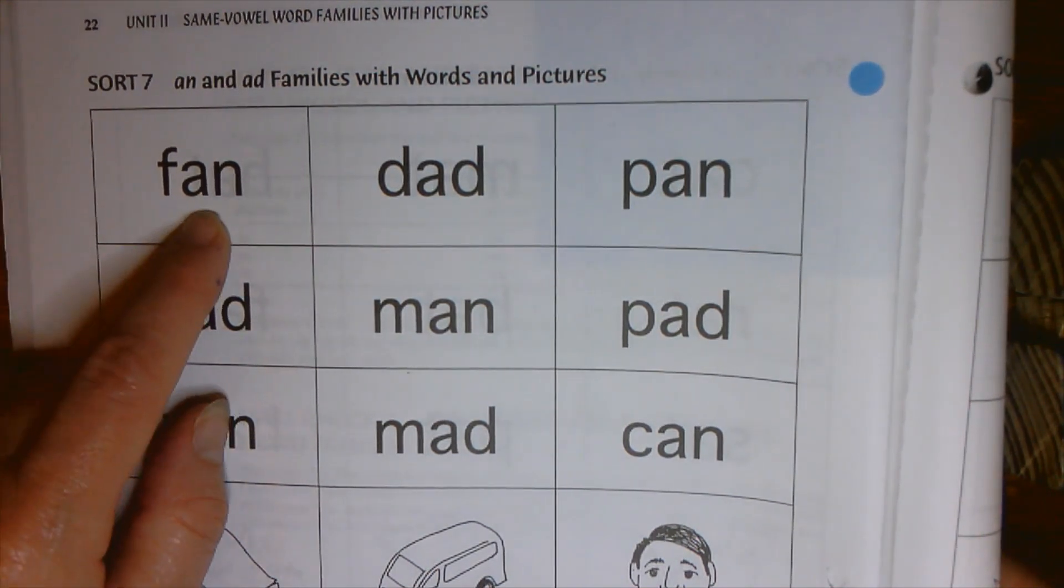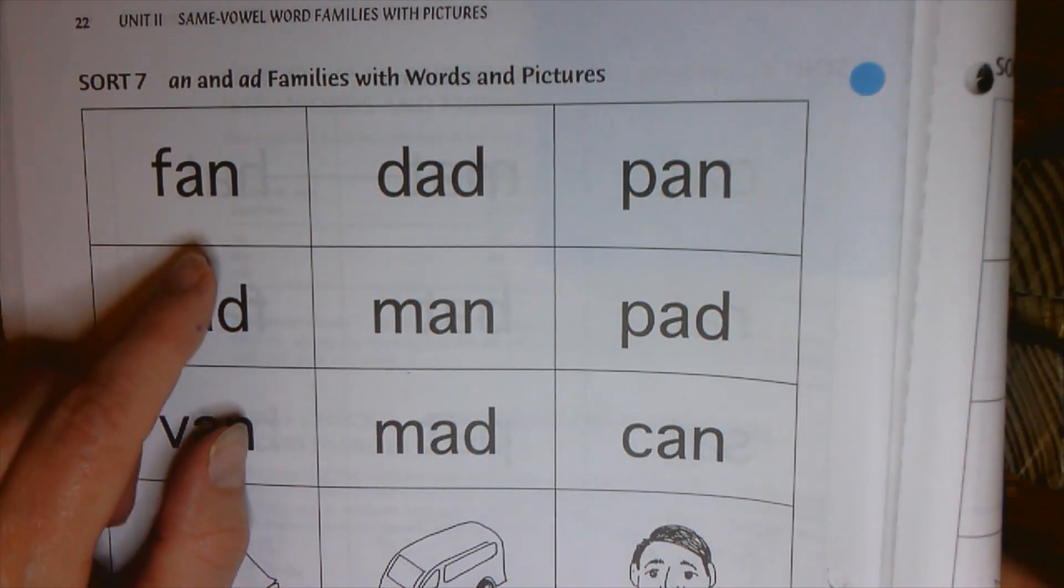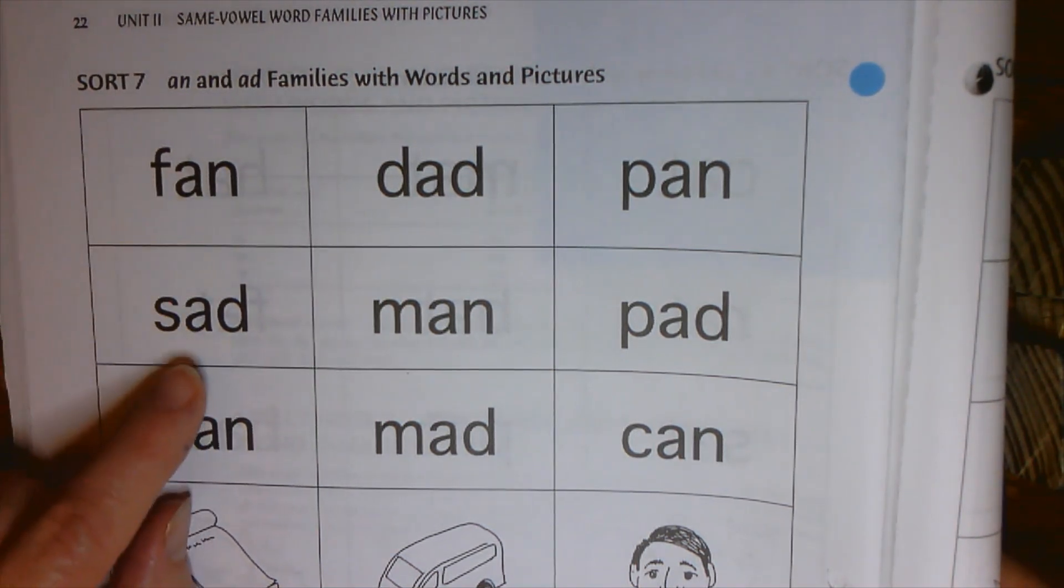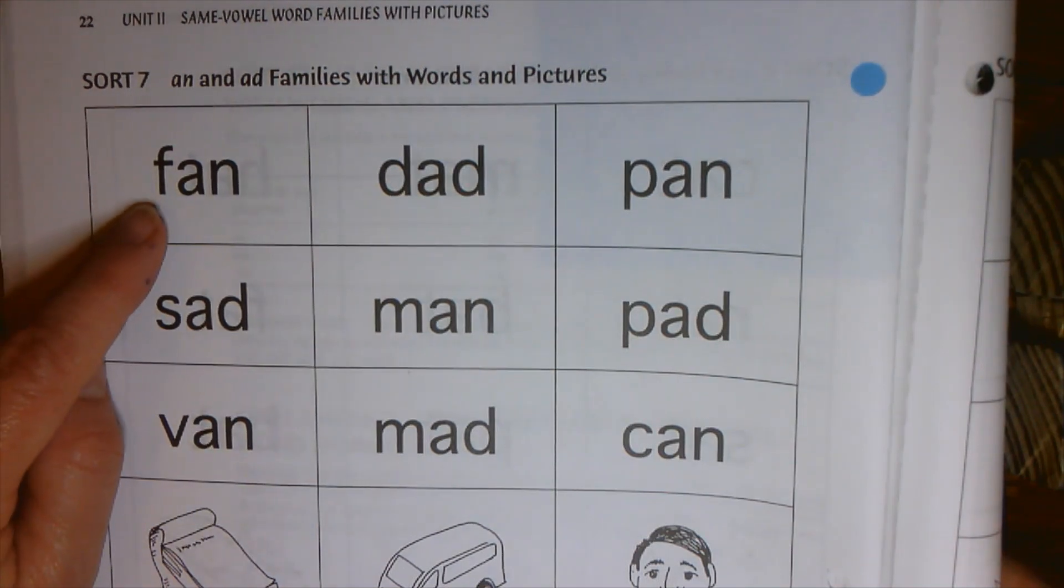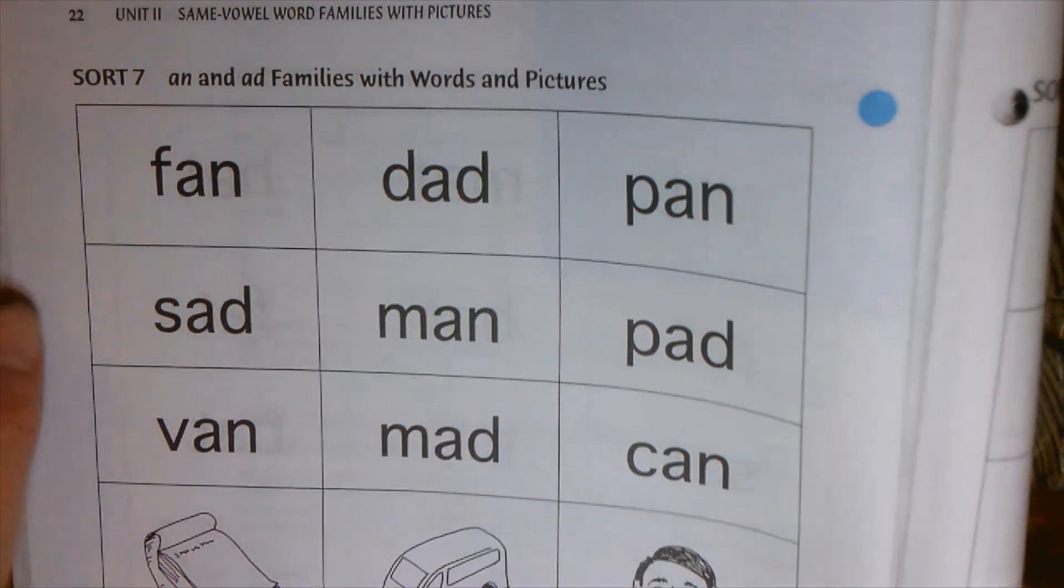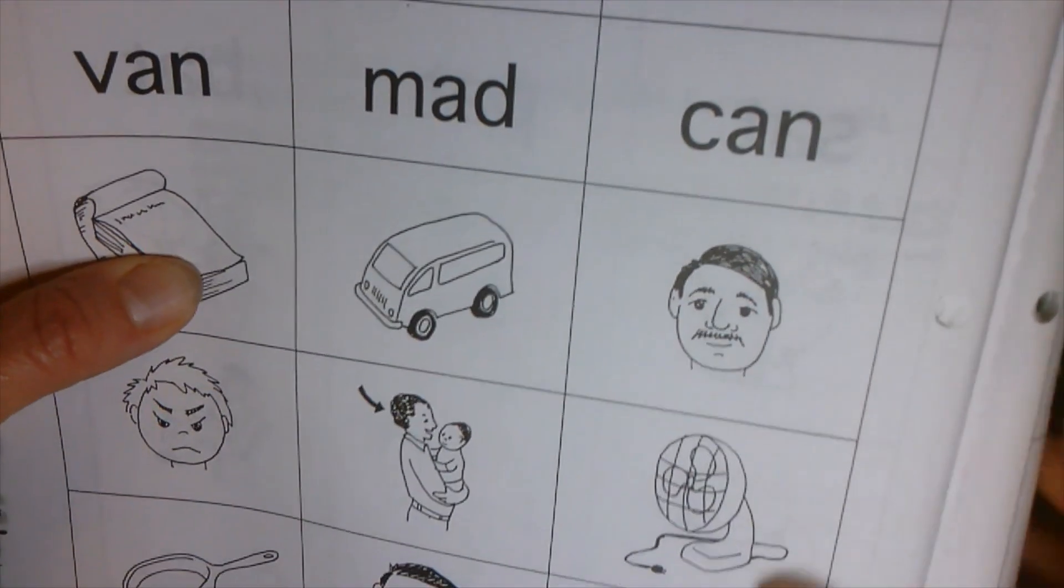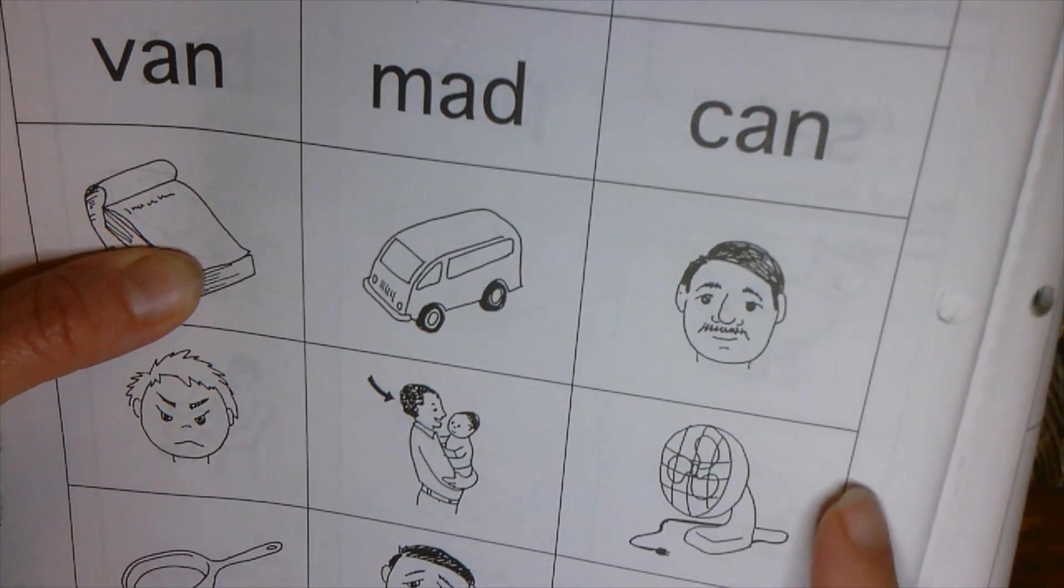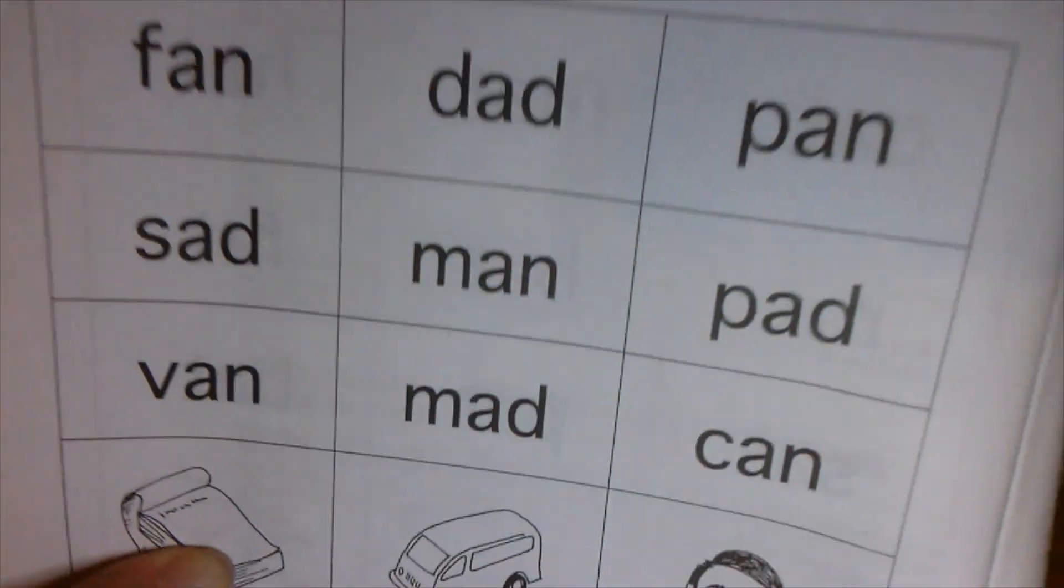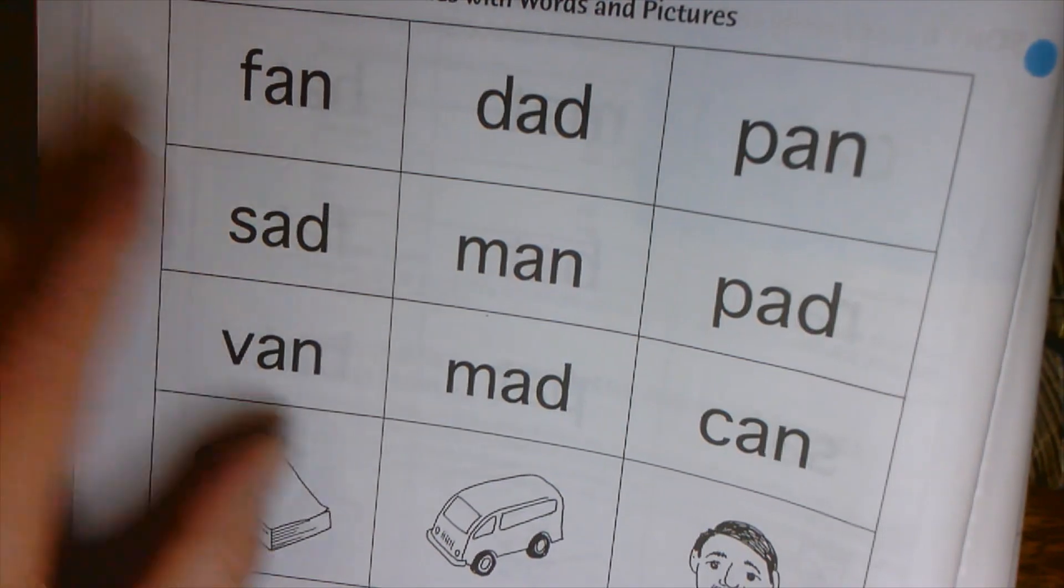Last time, all the words ended with AT. This time, you have AN, and also AD, so F, A, N, FAN, and when you look at the pictures, you can see here's the picture, so when it's cut out, you're going to put the picture of the FAN next to the word that says FAN.